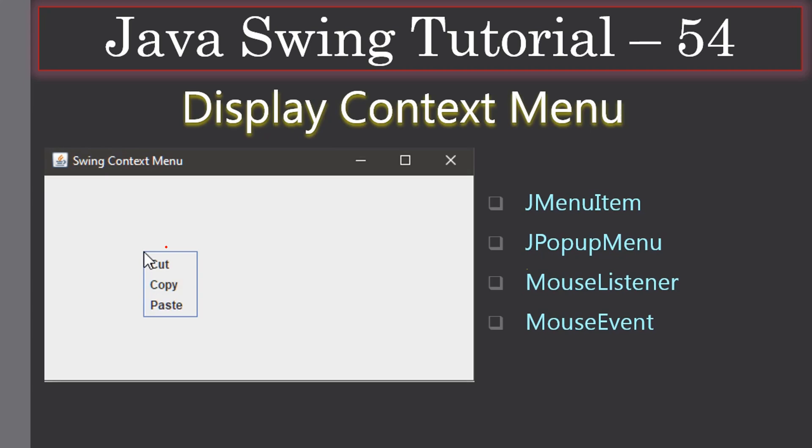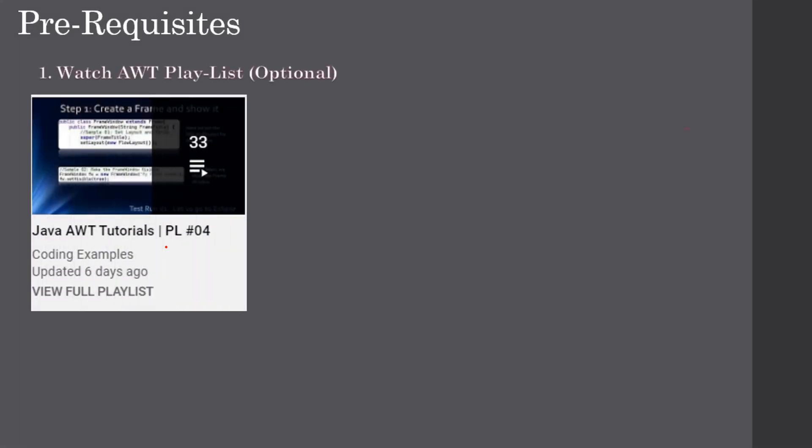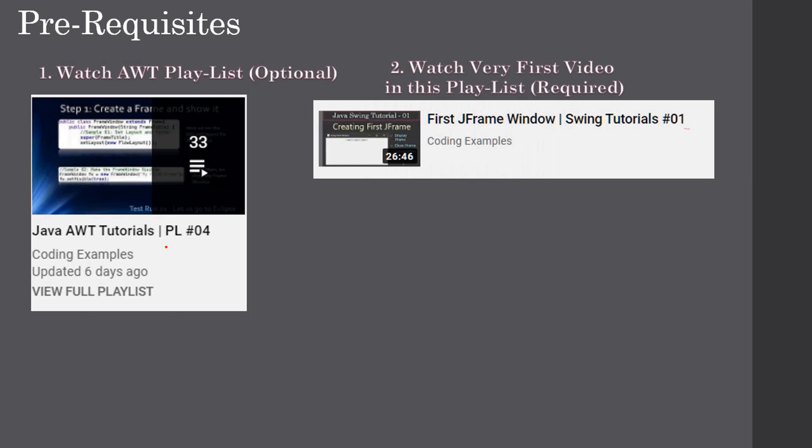The AWT playlist is optional, but if you watch those videos you will get good hands-on experience that will make learning Swing easier. The very first video in this series is required because that's where we show how to create a JFrame window and display it. In this video we will make use of the already-created JFrame window.